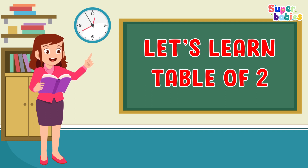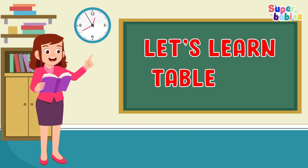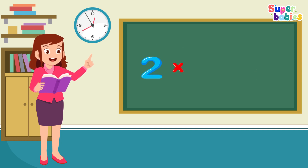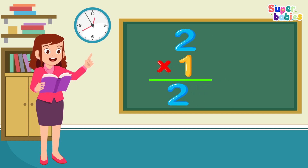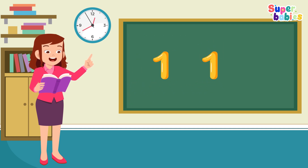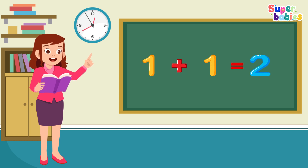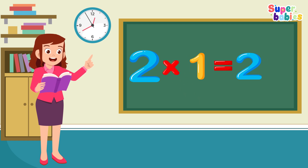Let's learn the table of two. Two times one equals two. Two, one equals two. One, two, one equals two. Two times one equals two.